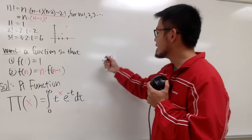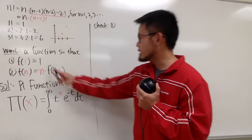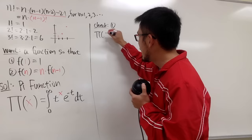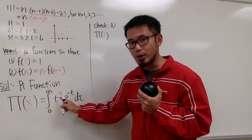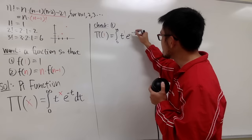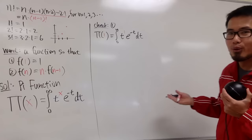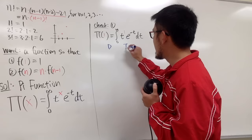So this is the definition of the pi function, and in this video I'll show you these two properties. Let's check the first property: I will plug in 1 for x, so Pi(1) is the improper integral from 0 to infinity of t to the first power times e to the negative t, dt. This is calculus 2 integration by parts. We can do it with the DI setup — differentiate t and integrate e to the negative t.